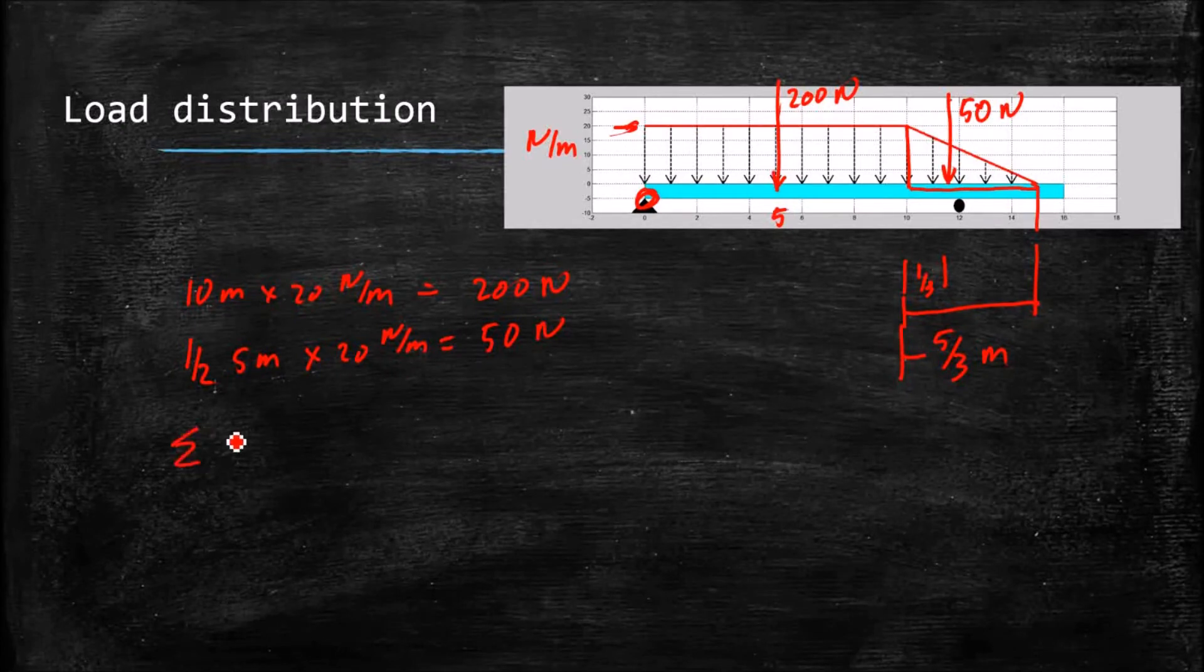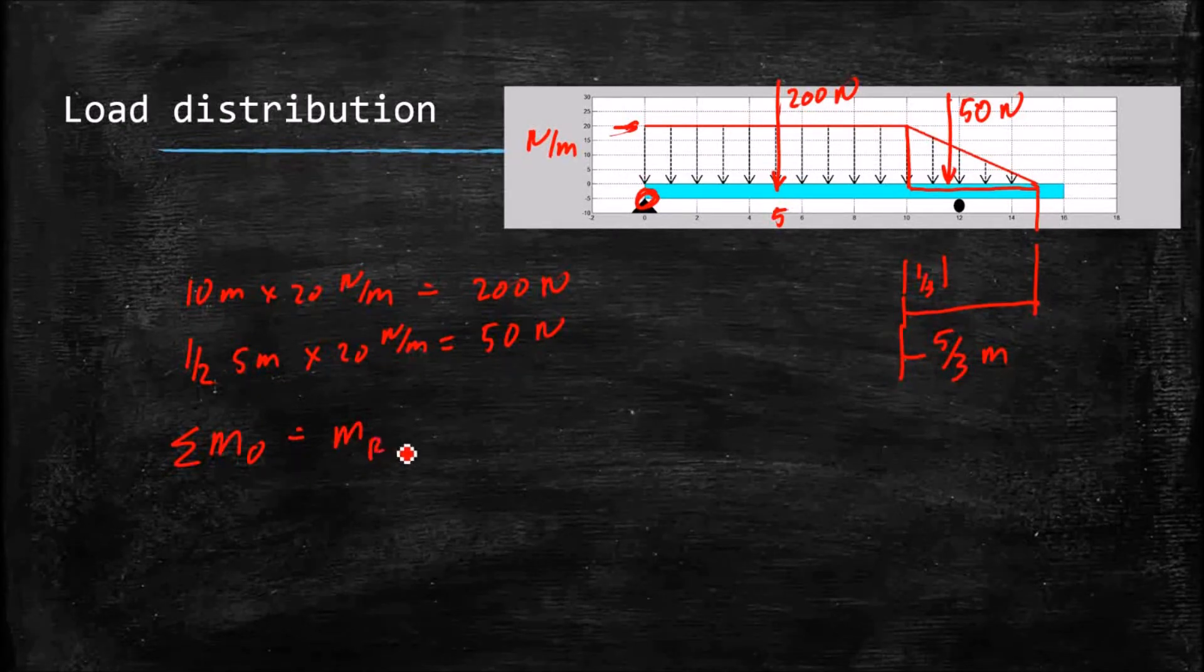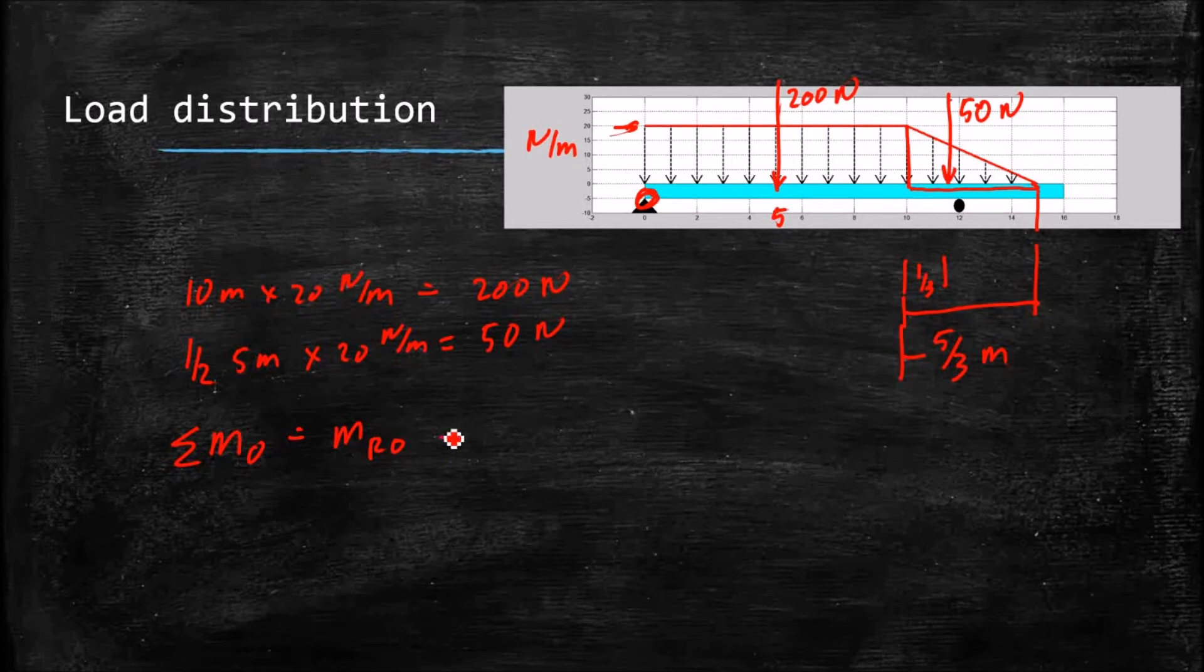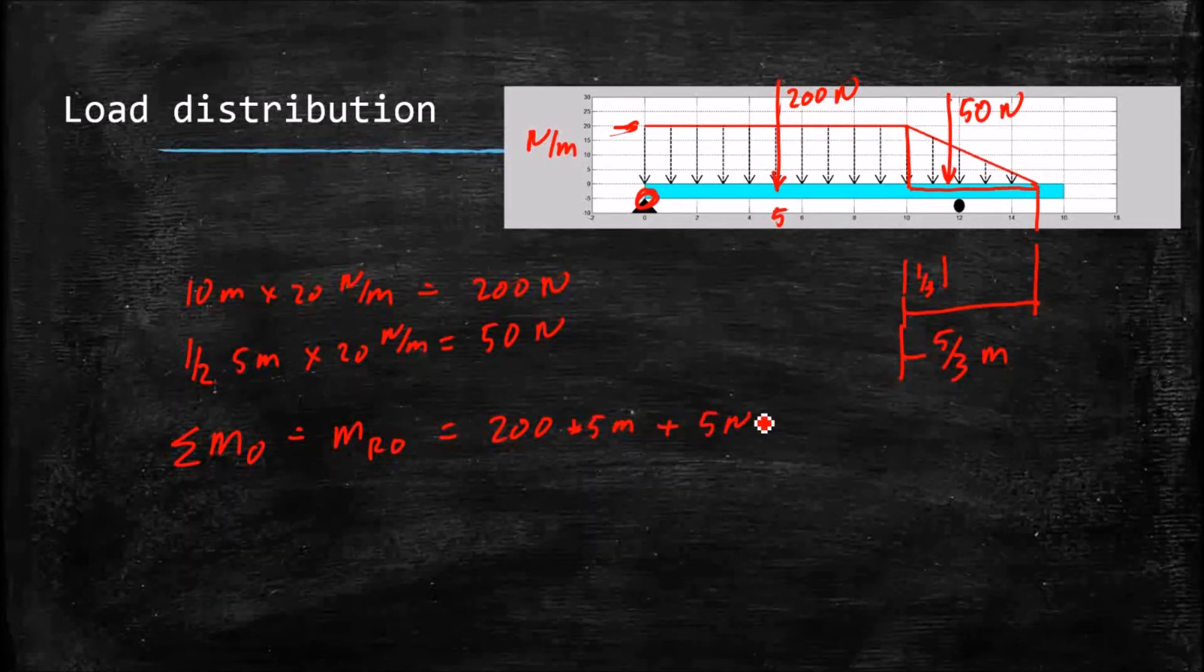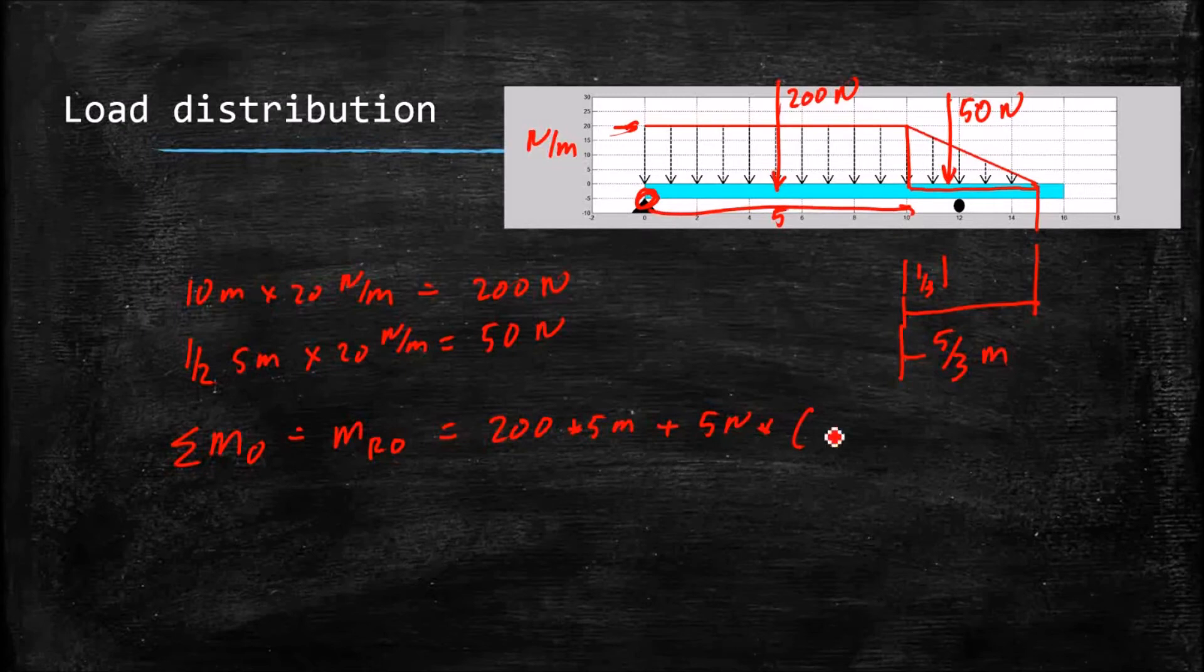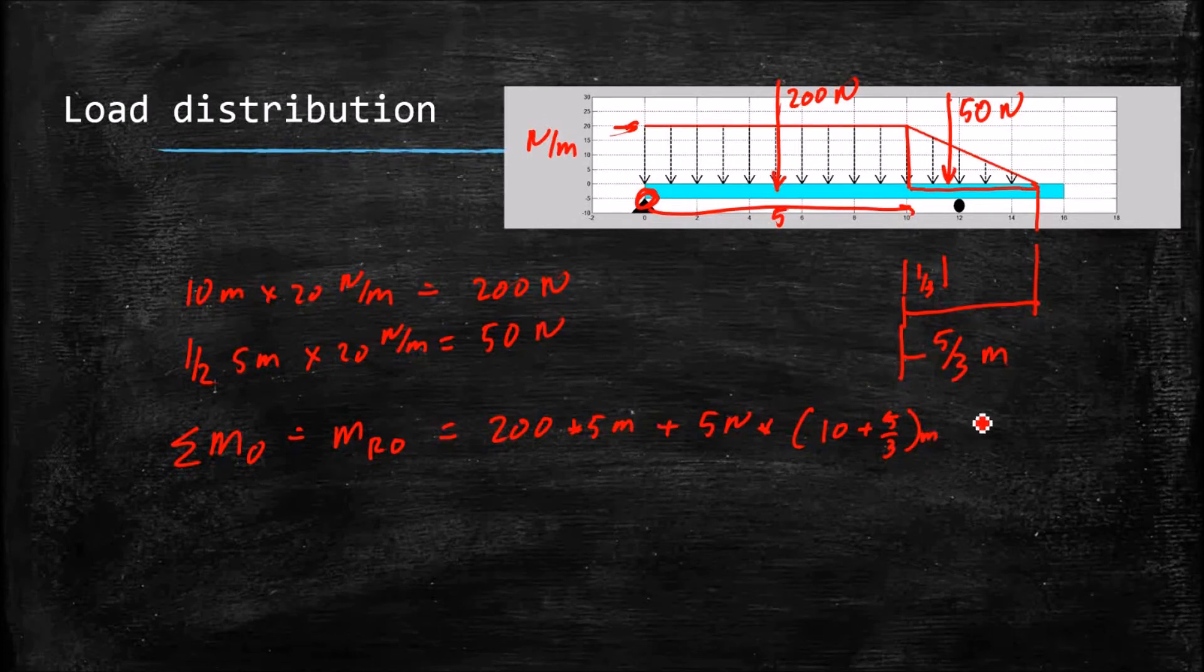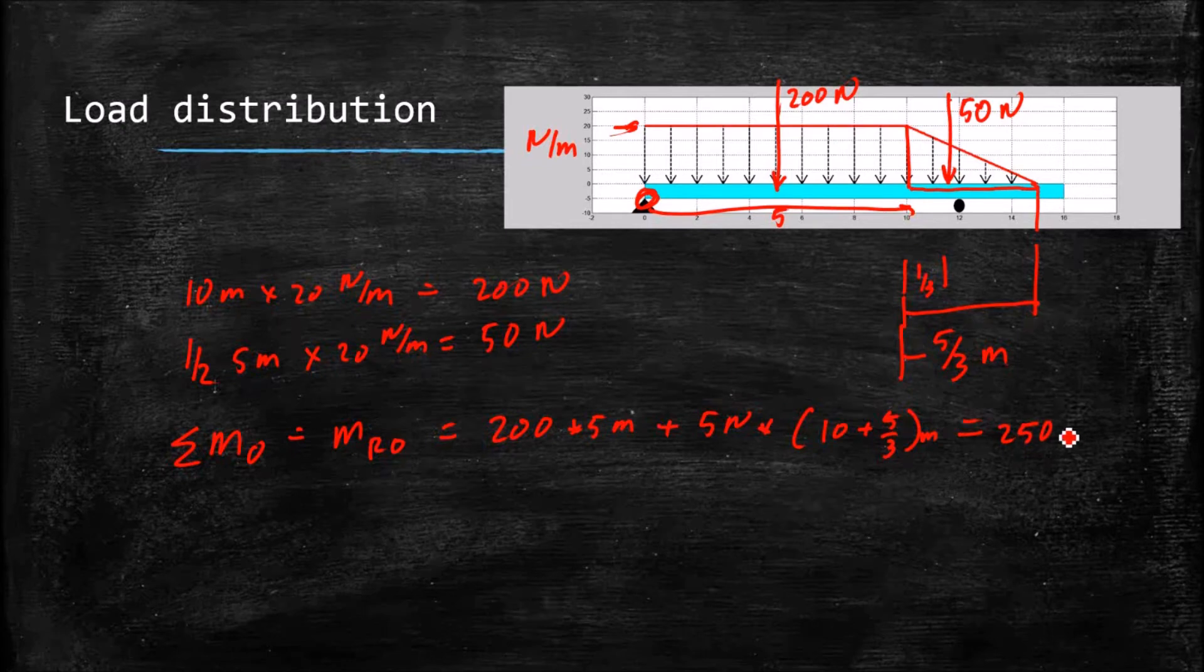So I'm going to say that the sum of the moments about zero is equal to the moment of our resultant force about zero, and that's simply our 200 newtons times the 5 meters, plus our 50 newtons times, I've got 10 meters right there, and then I have another 5 thirds meters, and that is equal to the moment from our resultant force, which has a magnitude of 250 newtons at some unknown distance d.